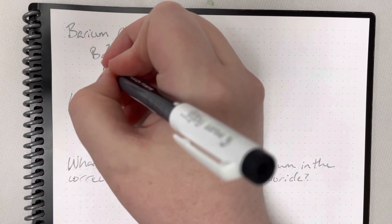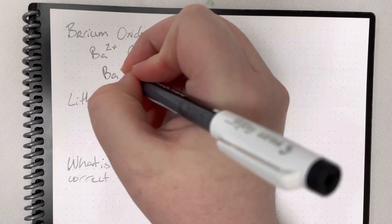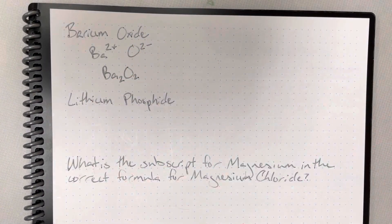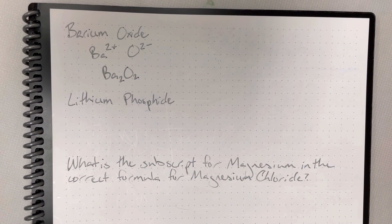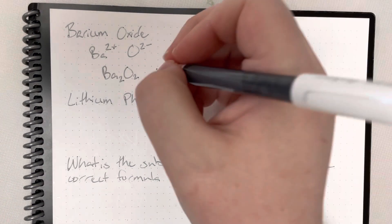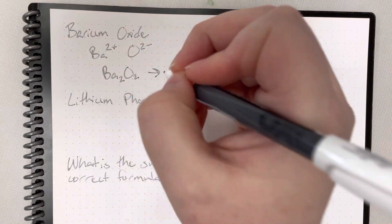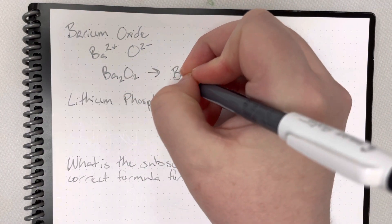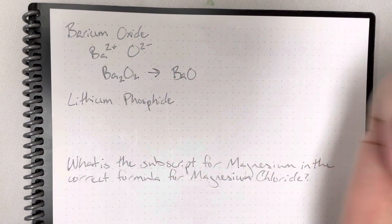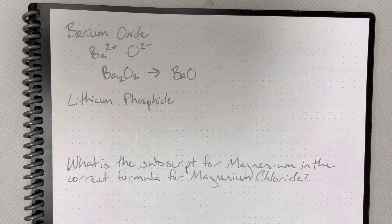Once I crisscross charges for subscripts, I am left with Ba₂O₂. Now I need to see if that formula is in its most simplified state. The ratio 2 to 2 can be simplified to 1 to 1, so this will turn into BaO as my final answer.